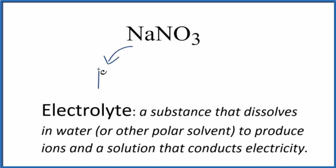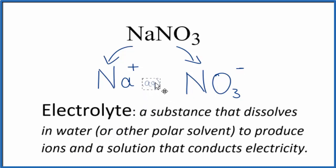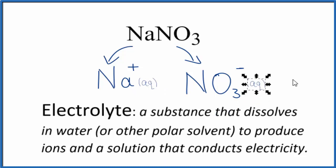We'll get Na with a 1+ charge — sodium is in group 1 on the periodic table and forms ions with a 1-plus charge. And the nitrate is very soluble, so we'll also get a nitrate ion, NO3 with a 1-minus charge — a very good one to remember. Since they dissolved in water, being a soluble compound due to the sodium and the nitrate ion, we're going to put AQ after them. They're aqueous.